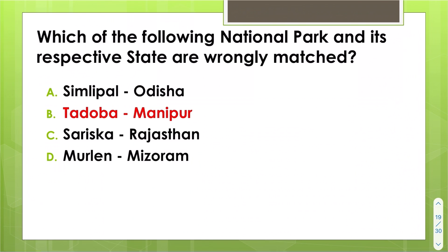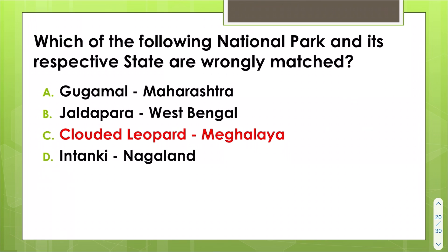Which national park and its respective state are wrongly matched? Simlipal is in Odisha, Sariska National Park is in Rajasthan, Murlen National Park is in Mizoram — those are correct. The wrong one: Tadoba National Park is in Maharashtra, not as given. Also, Gogamal National Park is in Maharashtra, Jaldapara National Park is in West Bengal, and Intanki National Park is in Nagaland — but here it should be Tripura.